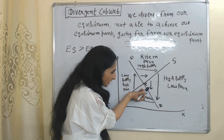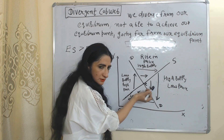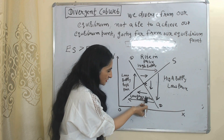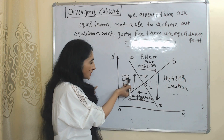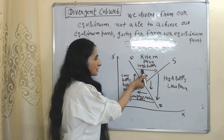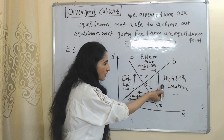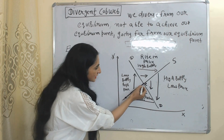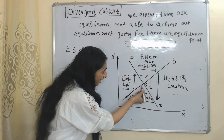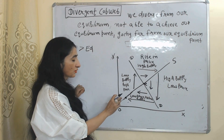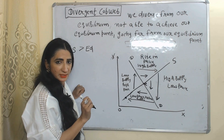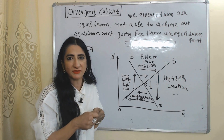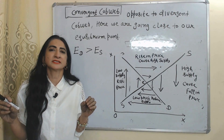Suppose we start from a certain point. Higher price leads to higher supply, so we move down. Higher supply causes lower price, so we move here. Low price reduces supply, so we move up. Low supply causes higher price, so we rise again. Rising price increases supply, we move down. Higher supply causes lower price, and we move further out. Eventually, you can see our equilibrium point is at the center, but we are very far from it. This is called a divergent cobweb, where elasticity of supply is more than elasticity of demand.